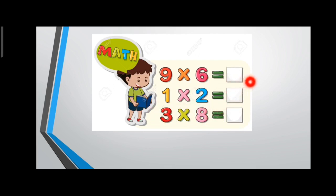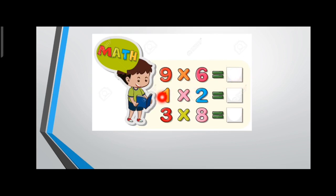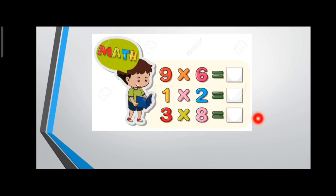You would have observed that 9 and 6 are both positive numbers, and the product 54 is also positive. If both multiples are positive, the product will definitely be positive. Similarly, 1 and 2 are positive, so the answer is positive. 3 multiplied by 8 gives positive 24.